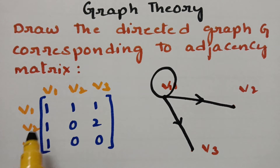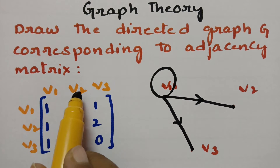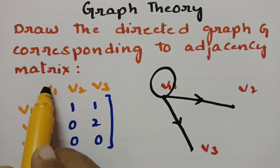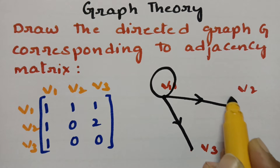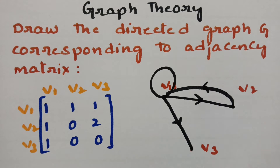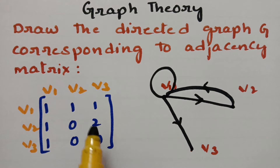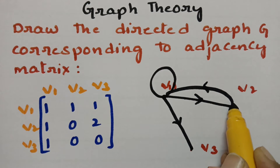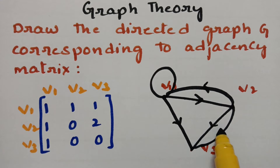Next, coming to V2. V2 has a relation with the other three vertices: V1, V2, and V3. V2 makes an edge with V1 — it should be towards V1, in this direction. V2 to V2 is 0. And V2 to V3 makes two edges, so from V2 to V3 it makes two edges with direction towards V3 outwards.